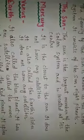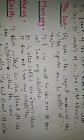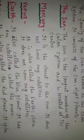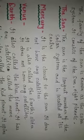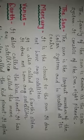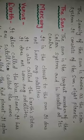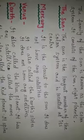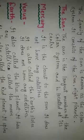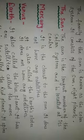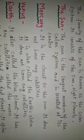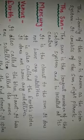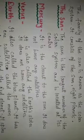Mercury. Mercury is the closest planet to the sun. It does not have any satellite. It is the fastest moving planet and takes only 88 days to revolve once around the sun. It takes 59 days to complete one rotation on its axis.